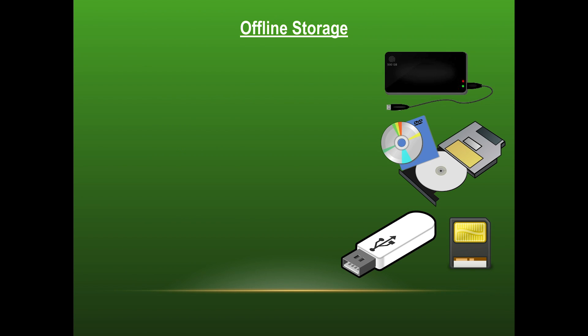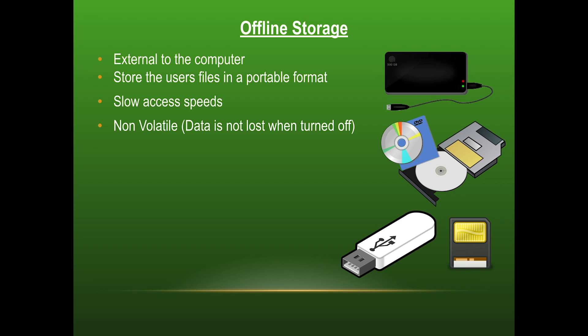Next, we have offline storage, so the offline storage is completely external to the computer. So it must be mounted or attached to the computer, and you can see here, this external hard drive has a USB port, our DVDs, CDs, and optical disks of all kinds will have some sort of disk drive in order for them to be read. A flash memory would also attach with a USB port, and the SD card would also have some sort of SD port or external reader that could be used. It stores all the files in a portable format, it's specifically designed to be moved around. It also has the slow access speed. This is also non-volatile, so when we turn it off or we detach it from the computer, the data will not be lost.